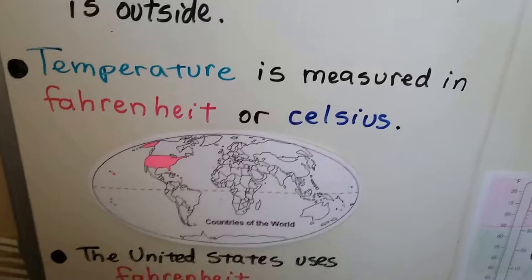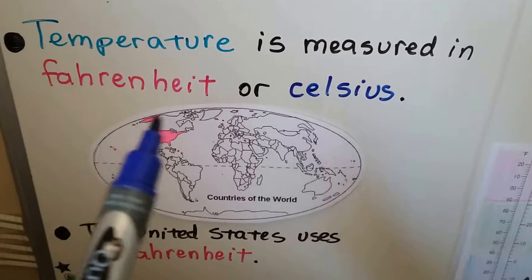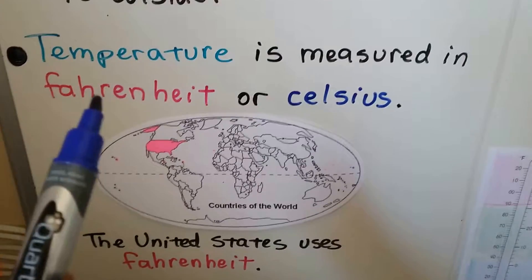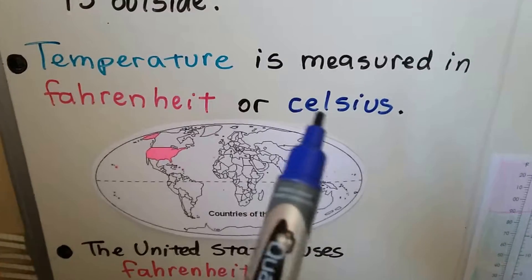We can use an outdoor thermometer to find out how hot or cold it is outside. And temperature is measured in Fahrenheit or Celsius. It's pronounced Fahrenheit, see how it's got an H here in front of the R? Or Celsius. The C-E says Suh.